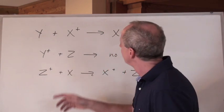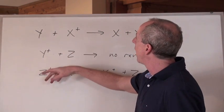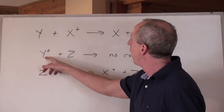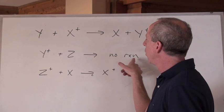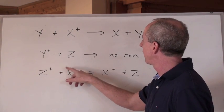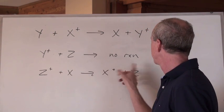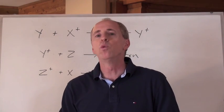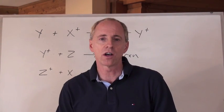Here's the deal. Given these three reactions: Y reacts with X positive to make these chemicals here, but when Y positive is put in with Z you get no reaction, but when Z positive is put in with X you actually get a reaction take place. The question is, which one of these chemicals is the strongest oxidizing agent?